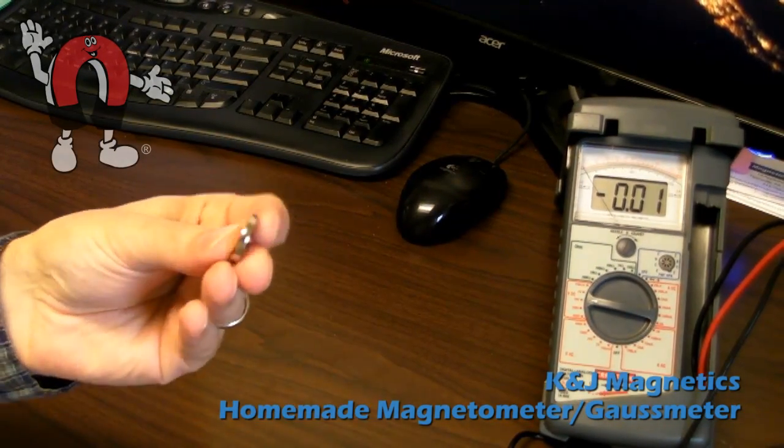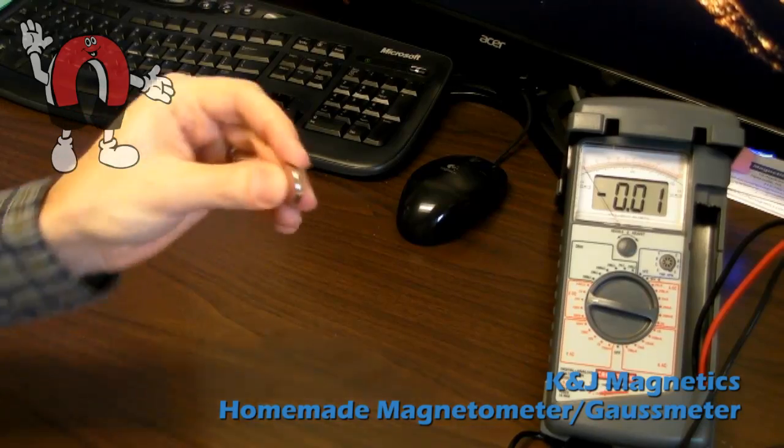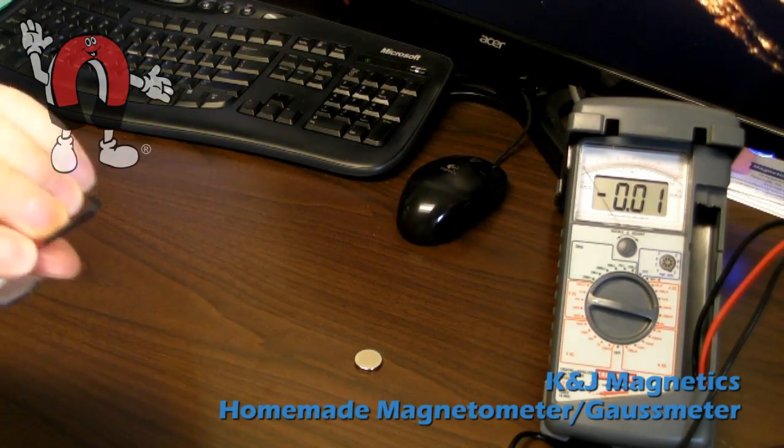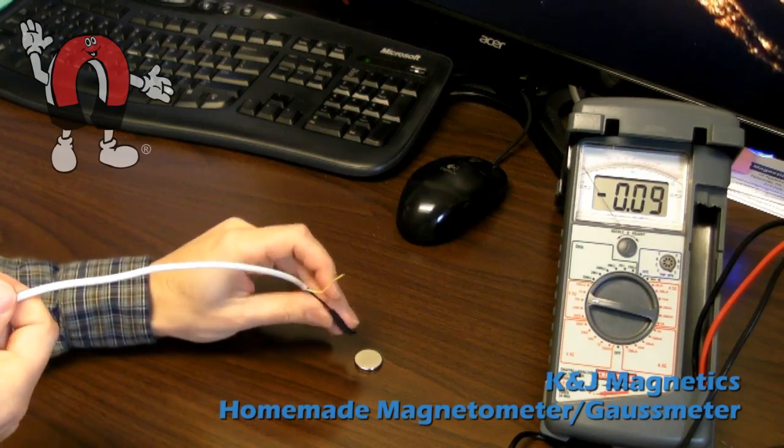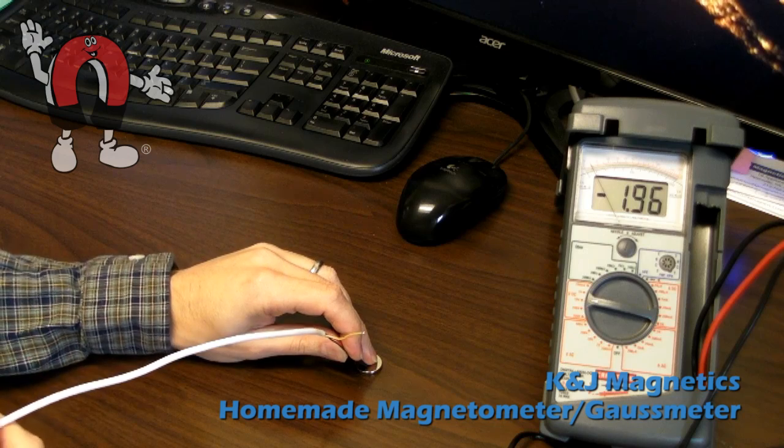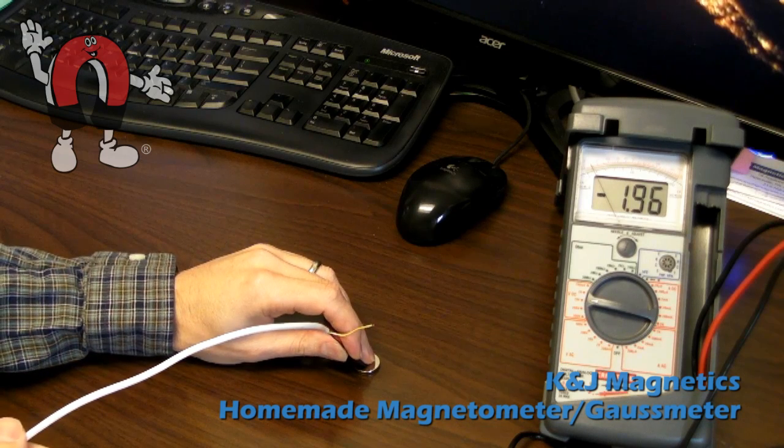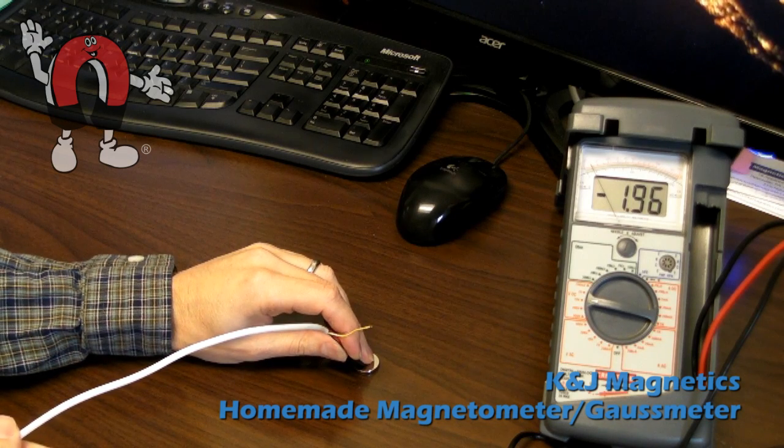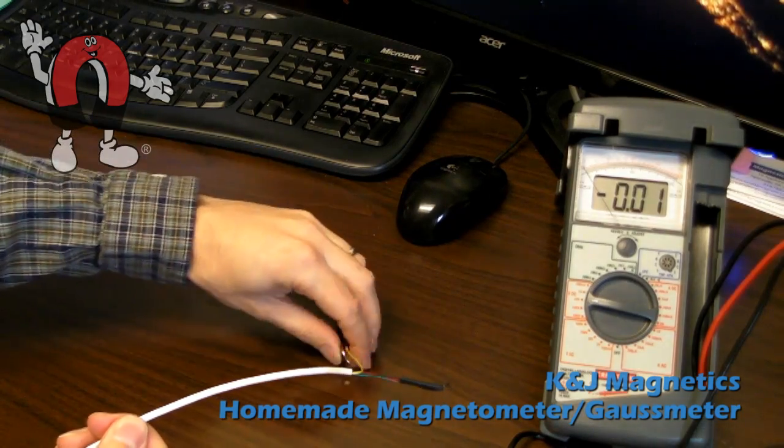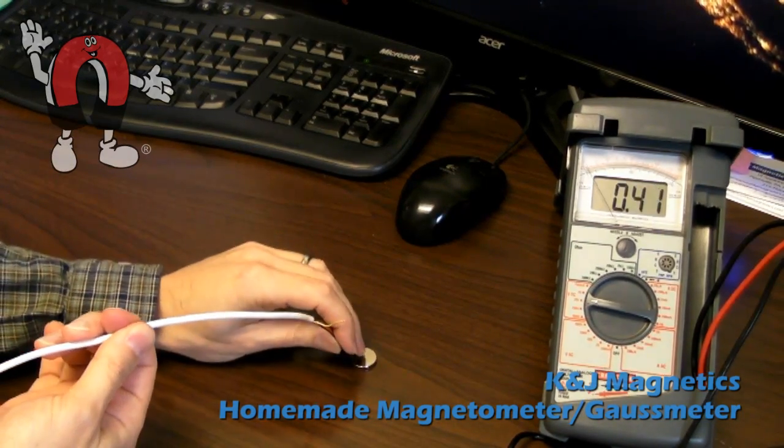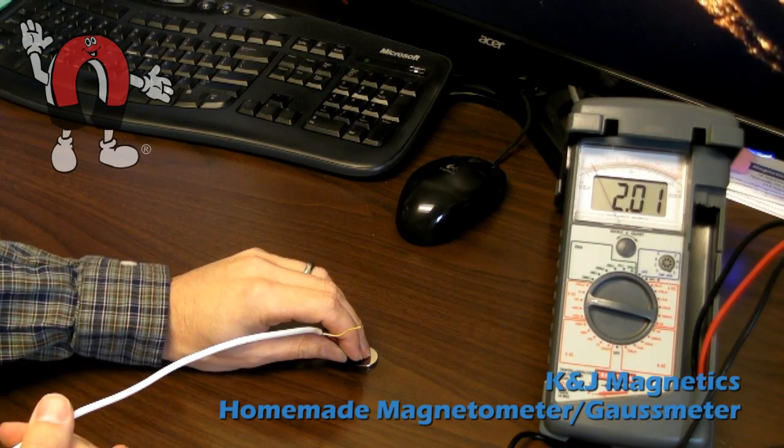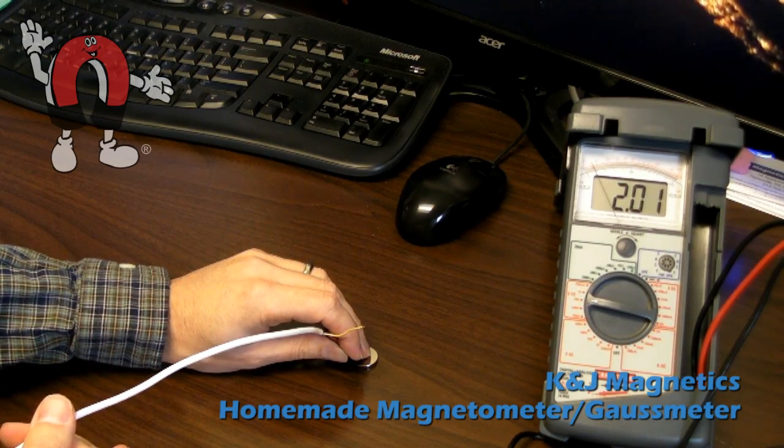We could take a DC-2 magnet, that's a three-quarter inch diameter by eighth inch thick disc. Take this sensor and press it right on the top, and it shows 1.96, so that's like 1,960 gauss. Showing negative is one direction. Flip it over, now you're showing positive: 2.01, so that's 2,010 gauss.